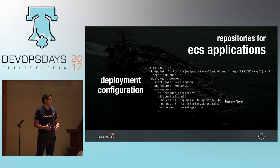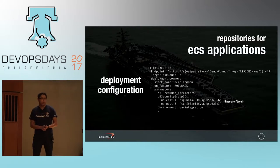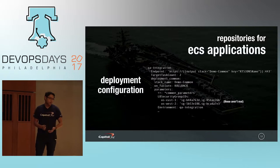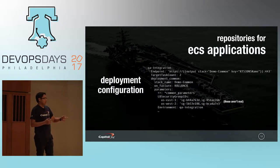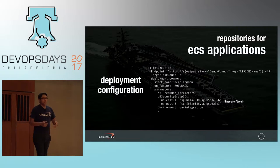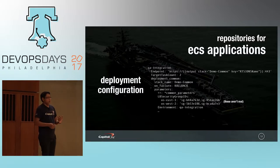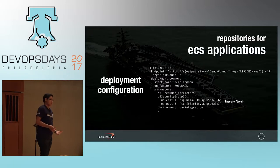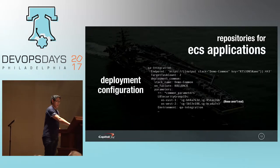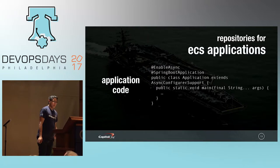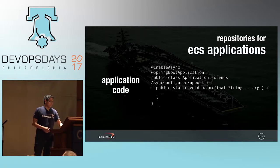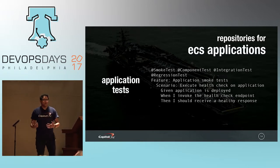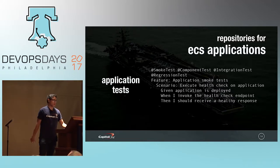For deployment configuration, the same YAML files I talked about before. For ECS applications, parameters are slightly different — things like security group IDs for your load balancer. One thing we built into this tool is the ability to specify parameter values per region, since those differ for things like security groups and subnets. Most of our applications are written in Spring Boot, and our tests are written in Cucumber with the JVM runtime.